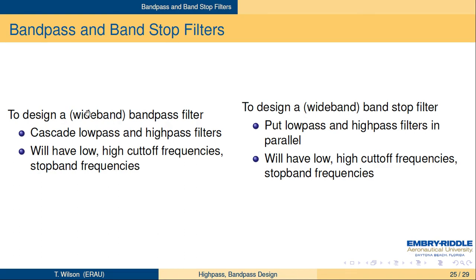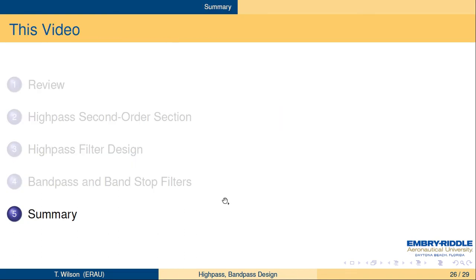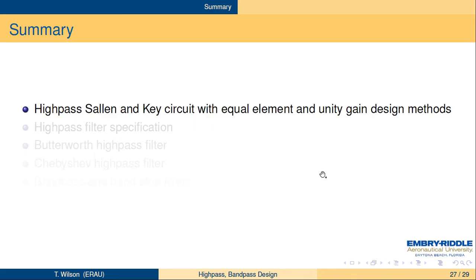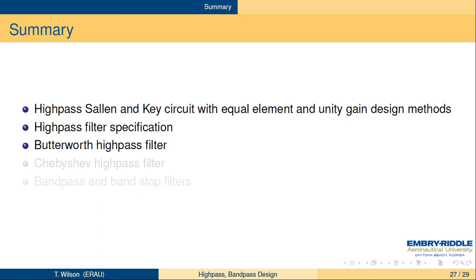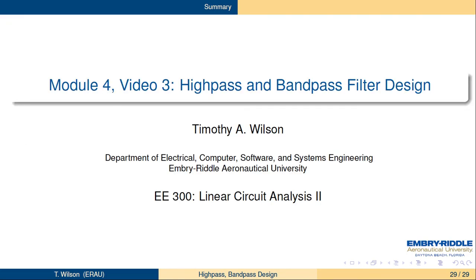To summarize: we covered the high-pass Sallen-Key circuit using both equal elements and unity gain design methods, discussed high-pass filter specifications, and worked through examples of Butterworth and Chebyshev high-pass designs. We also briefly covered band-pass and band-stop filters. Up next is transformers — a completely different topic from filter design — which will wrap up the class. This has been EE300 Linear Circuit Analysis 2, Module 4, Video 3: High-Pass and Band-Pass Filter Design.